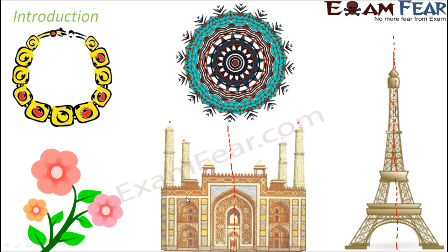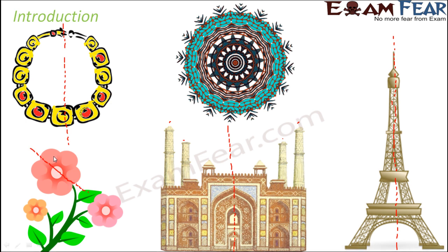Not all images or objects that you see around yourself would have symmetry — only some objects have symmetry. These are examples of some of those objects which possess symmetry. Look at this necklace: if you think of a line passing exactly through the center, this half of the necklace is exactly identical to this half. Similarly, when you look at this flower, you can think of many such lines of symmetry. For example, this line divides the flower into two halves which are exactly identical. So the flower also has symmetry.